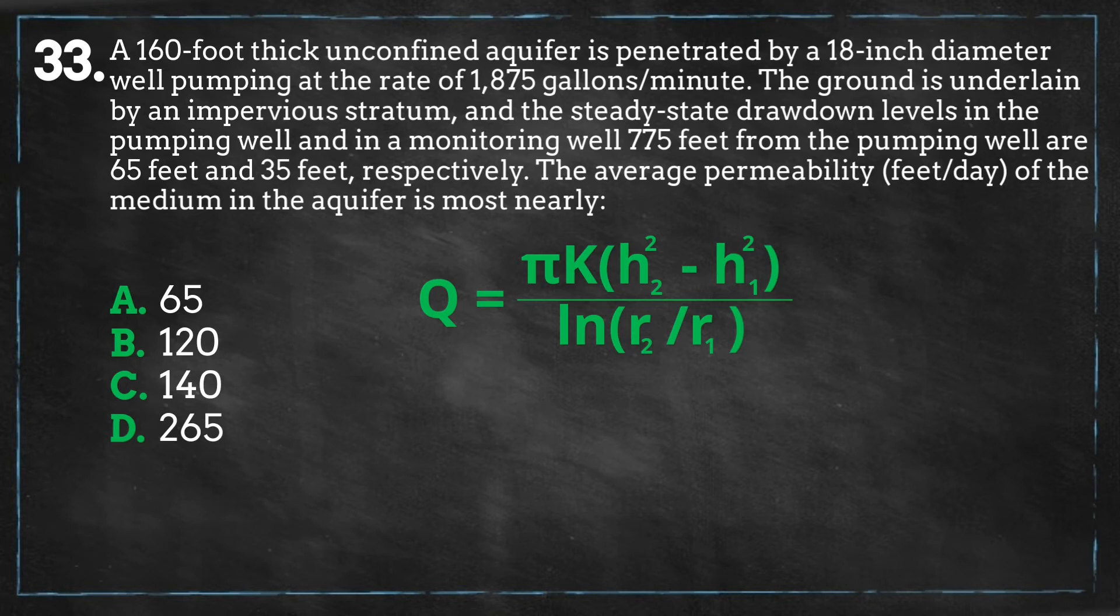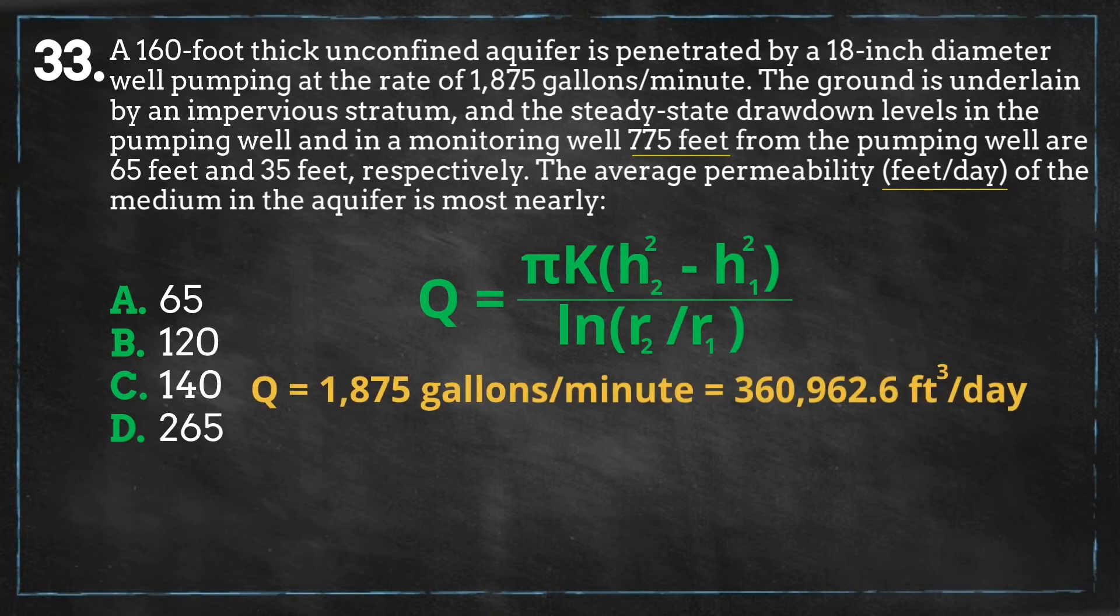Before we start plugging data into the equation, let's ensure that our flow rate is in units similar to the rest of our data, which looks like units of feet, as well as the desired units of our final answer, which is in units of feet per day. So we can do a simple unit conversion for our flow rate to match these units, and we get a flow rate of 360,962.6 cubic feet per day.